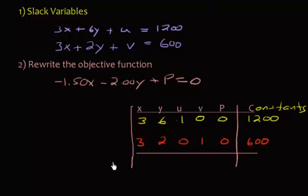Now, my last row, right here, is reserved for our objective function. So, that's going to be the -1.5, -2, 0 because no u's, no v's, has 1p, and then a 0 for the constant from right there. And that is our simplex table.